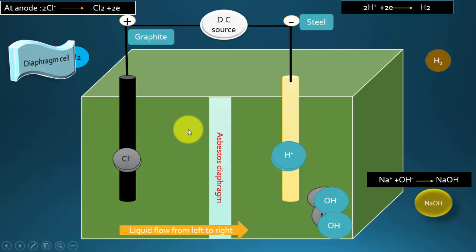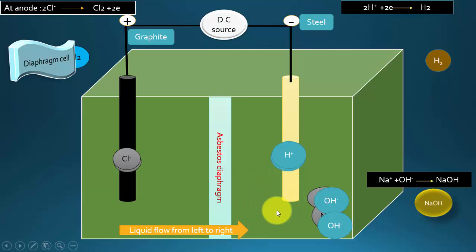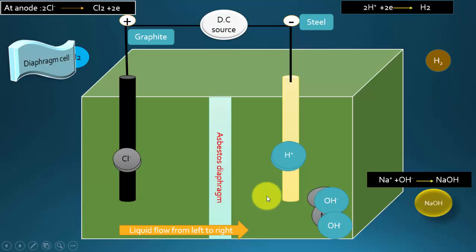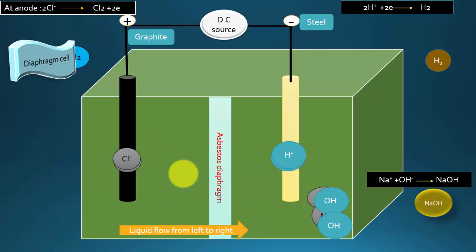The diaphragm cell is actually a very good cell, but there is one drawback: some sodium hydroxide may pass from the cathode compartment back into the anode compartment. This means sodium hydroxide can end up in both compartments, whereas we want it confined to one. This problem is addressed by the membrane cell. It must be noted, however, that most of the sodium hydroxide is still found in the cathode compartment.